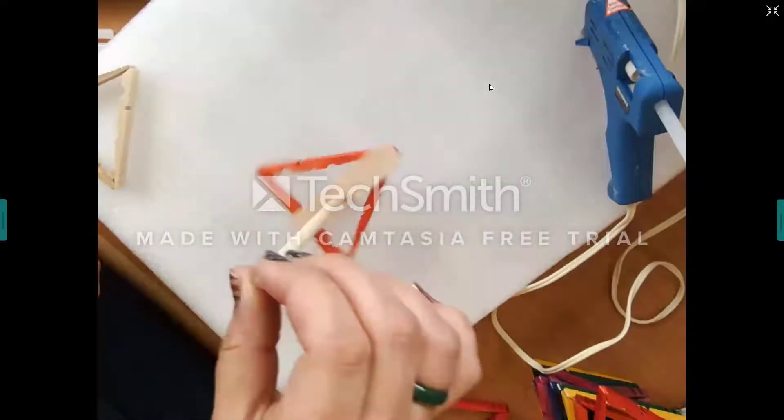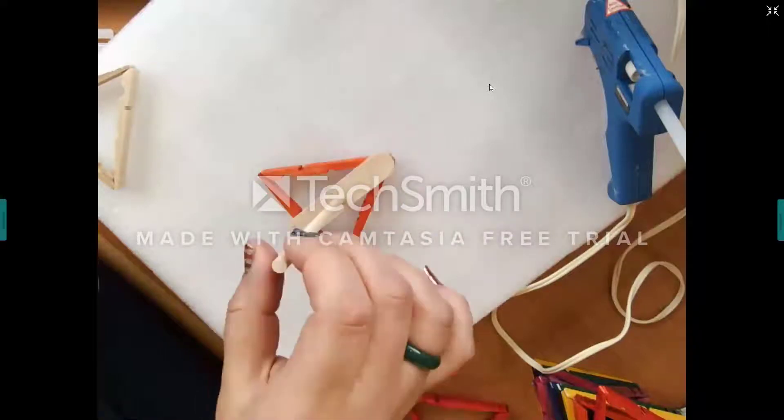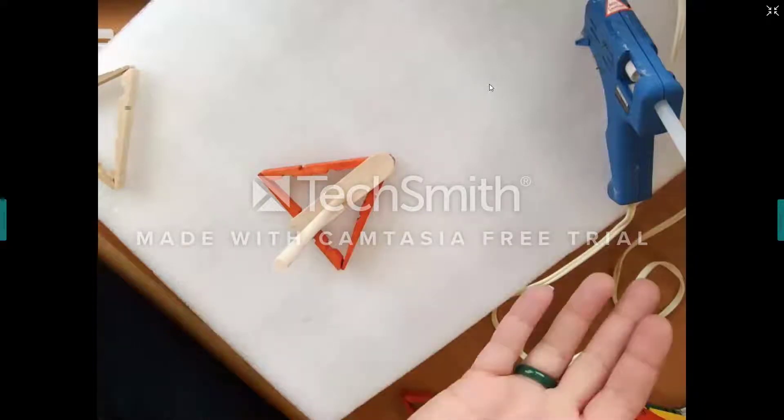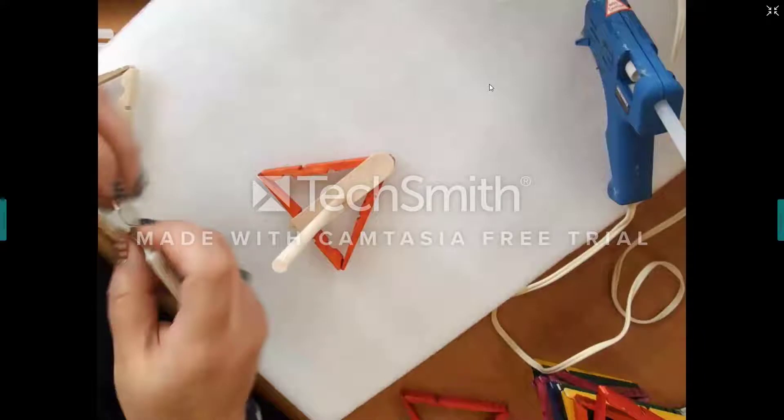Once your dowel rod is pretty secure, you can pick it up and twirl it around. You're pretty good. Again, the wood glue is not going to be an instant bond like the hot glue is. So just be aware of that.